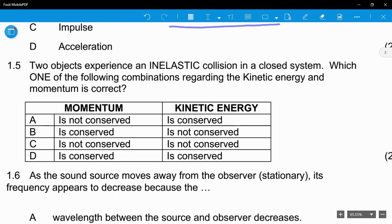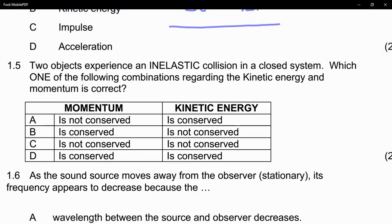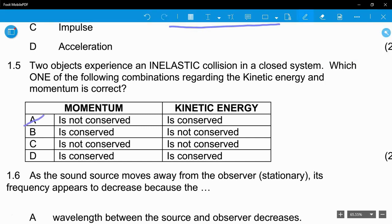Question 1.5: Two objects experience an inelastic collision in a closed system. Which one of the following combinations regarding kinetic energy and momentum is correct? This deals with the definition of elastic and inelastic collisions. In both collisions, momentum will always be conserved. So momentum is always conserved - it can't be A, it can't be C. Now we need to know whether kinetic energy is conserved or not conserved. It's inelastic, so we know that kinetic energy will be not conserved. So the answer is B - momentum is conserved, kinetic energy is not conserved.